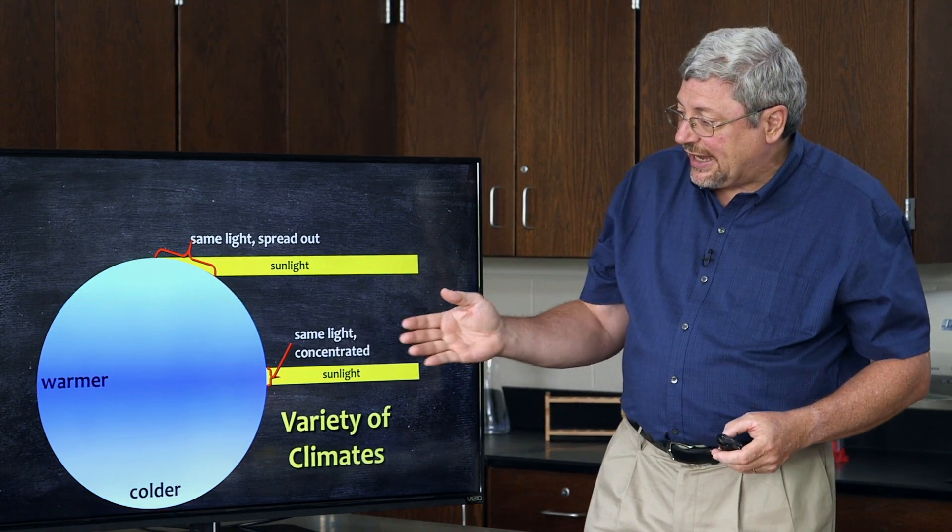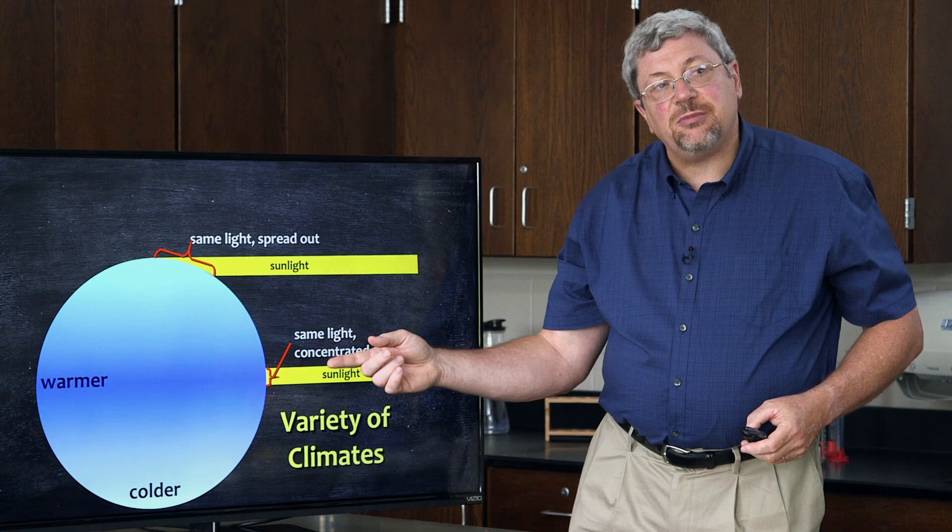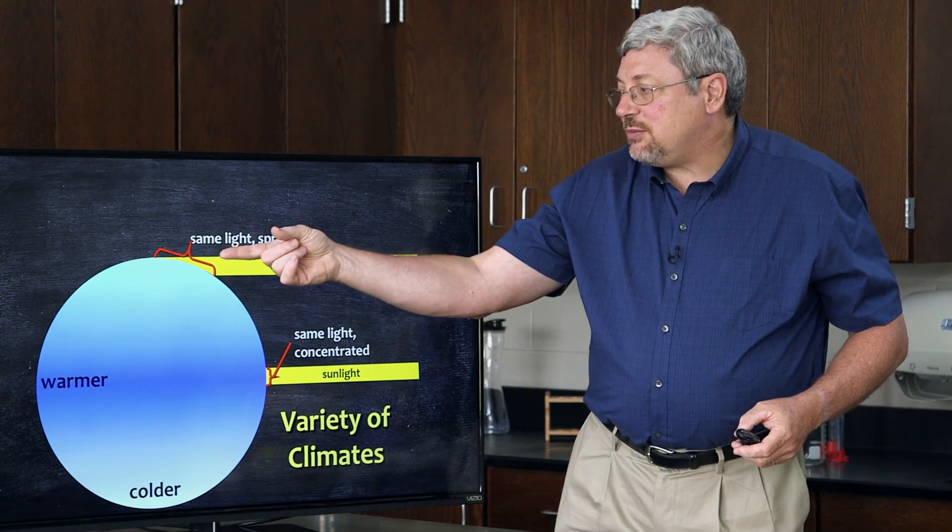So the same amount of light hitting the equator of the earth is concentrated in a small circle. That same amount of light hitting the pole of the earth is spread out over a long oval. The consequence is that the sunlight that hits the equator of the earth heats up the earth much more than the sunlight that hits the pole of the earth. The consequence of that is that the equator of the earth tends to be much warmer than the pole of the earth.